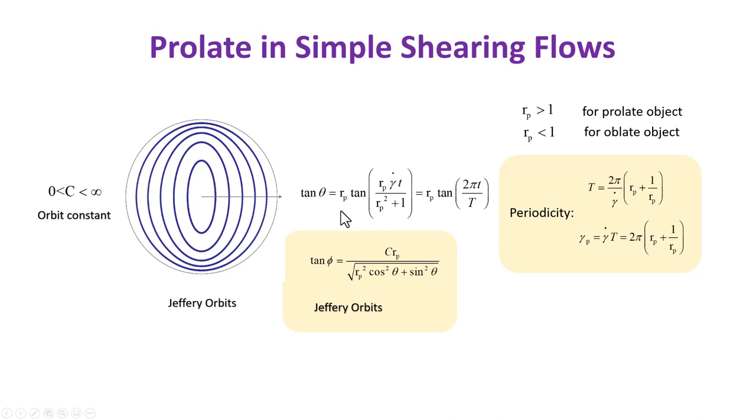The theta expression is expressed here. r_p here is the aspect ratio, which for prolate object is greater than one, and for oblate object is less than one. r_p is really another recast of the shape factor of the object. The shape factor b is defined by this. The periodicity of these orbits are here because these functions are periodic. Periodicity can be represented by t or by a shear strain gamma_p, one periodic rotation of the object. For one gamma_p, the object has finished one complete rotation. Of course, gamma_p is related to the shape of the object.